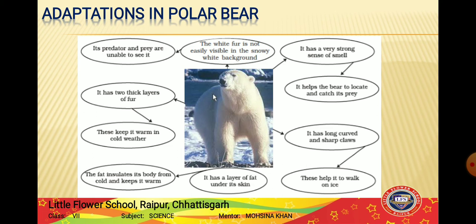Polar bears have two thick layers of fur on their body. The outer thick layer is made of hollow hair - hollow meaning the hairs are tube-like, and air can be trapped inside them. This hollow hair traps air and keeps the body warm, similar to what we learned in the fiber-to-fabric chapter about how sheep's wool keeps them warm.